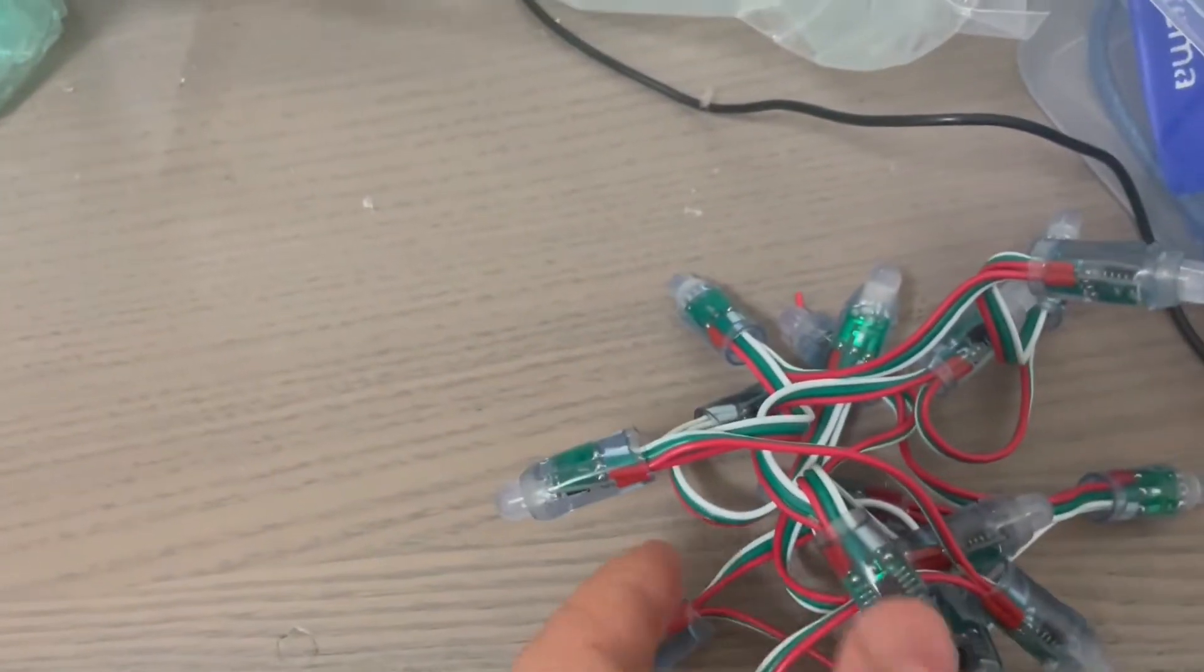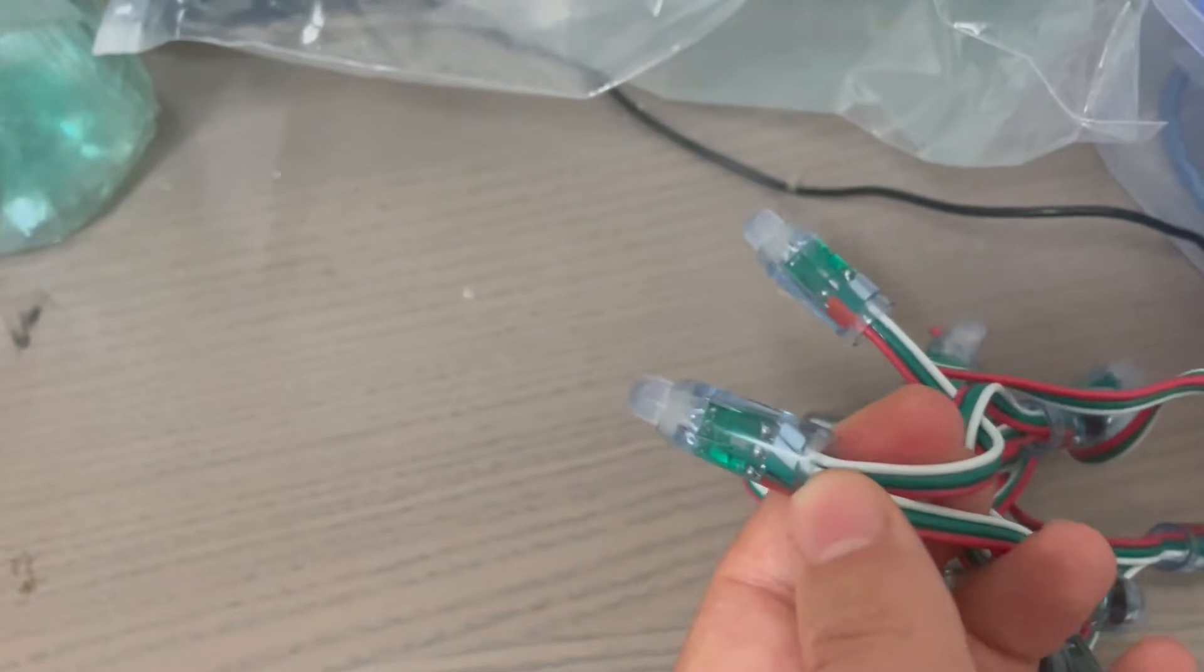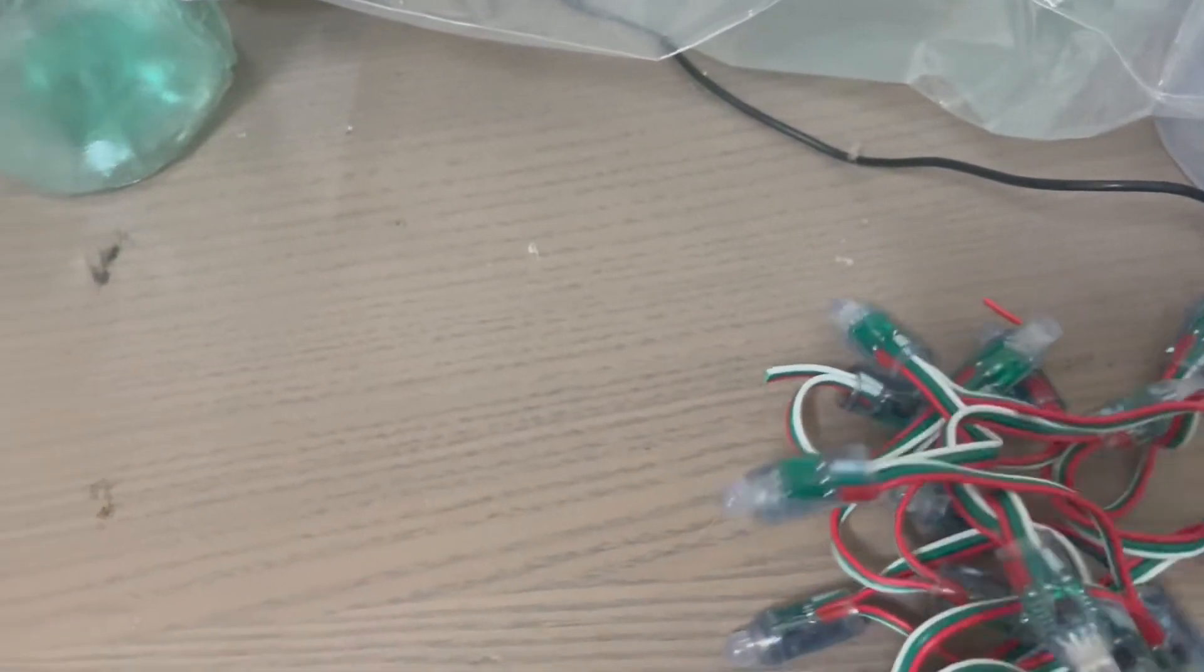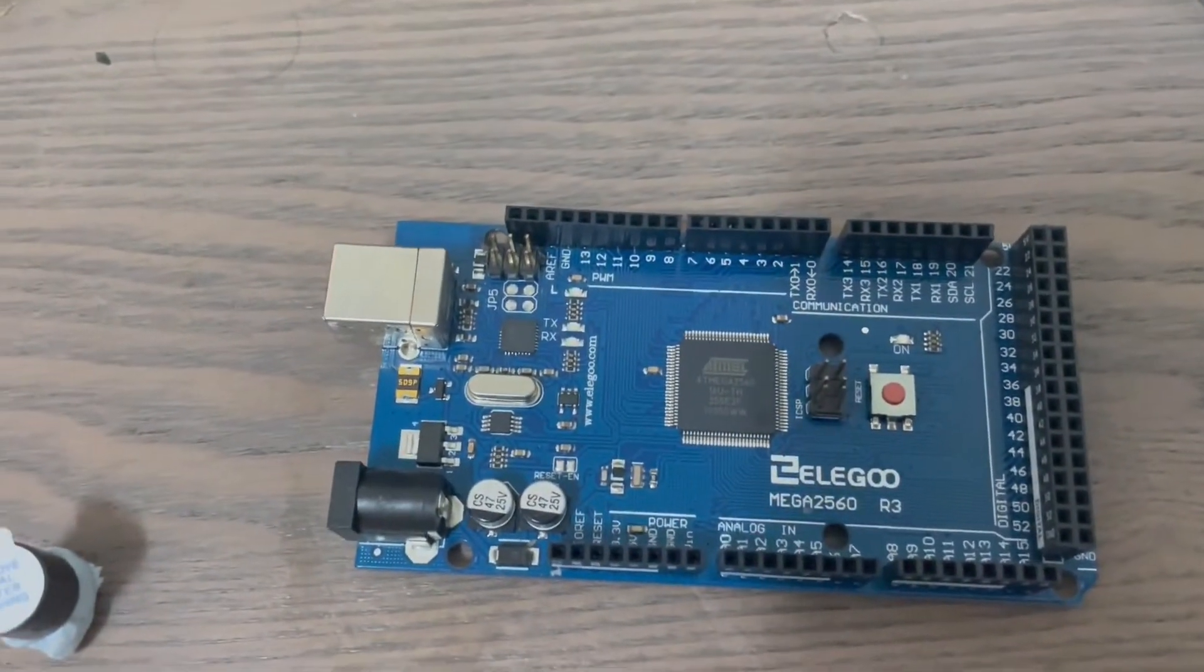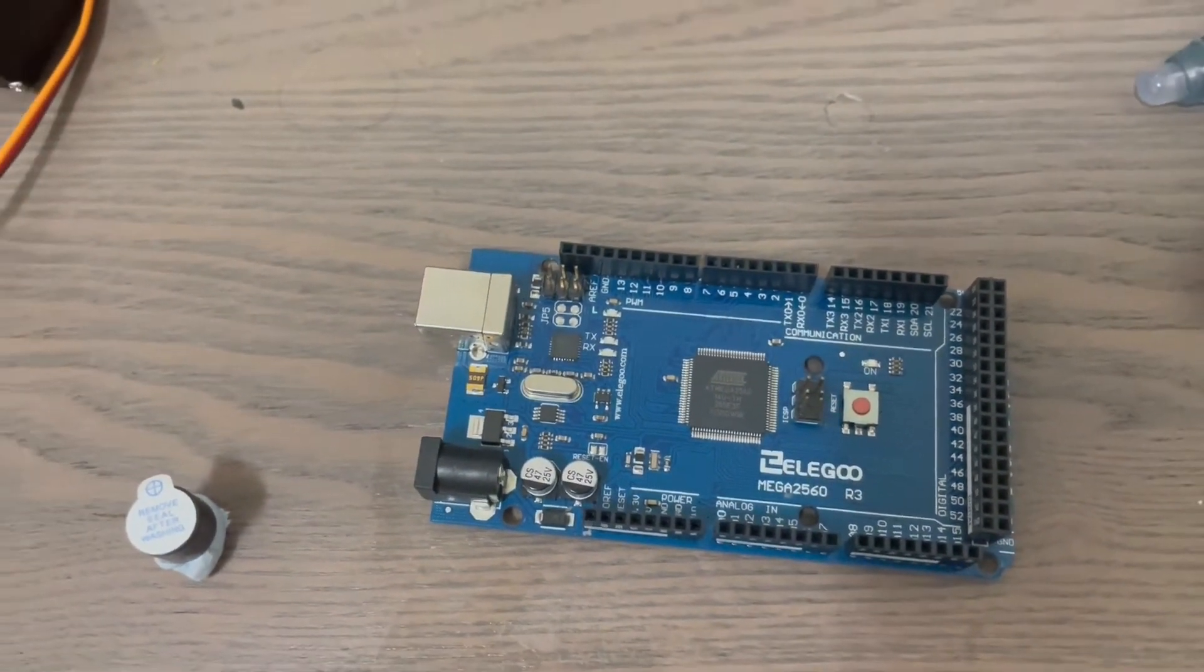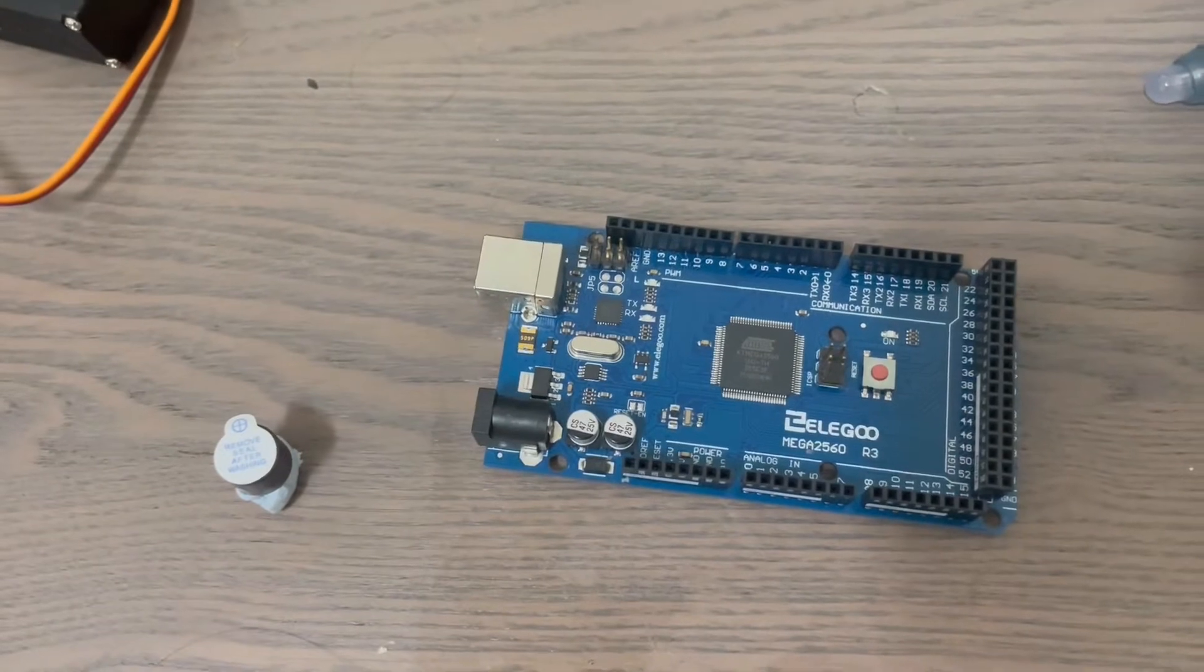And attached to the frame, there's going to be some addressable RGB LEDs. Of course, there's going to be a buzzer attached. And that's all going to be running through this Arduino Mega. OK, so we'll see how that goes. Thank you very much.